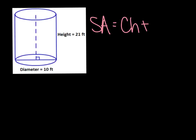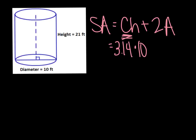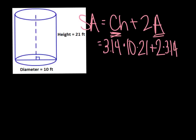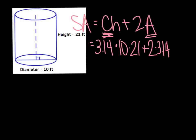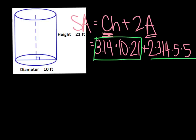So using SA equals CH plus 2A: C is π, which we use as 3.14, times the diameter of 10, times the height of 21. Plus 2 times A, which is π r squared — so times 3.14 times r, which is half the diameter, so times 5 times 5. With surface area you have to chunk because of order of operations, so take 3.14 times 10 times 21 first and you get 659.4.